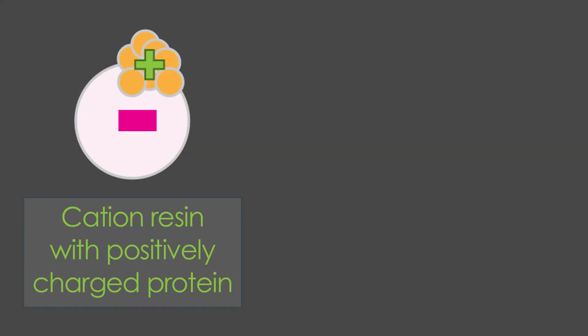Cation exchange resins are negatively charged but bind positively charged proteins. The purpose of the cation exchange resin is to bind positively charged protein, and in order to do this the resin itself has to be negatively charged — remember, opposites attract.